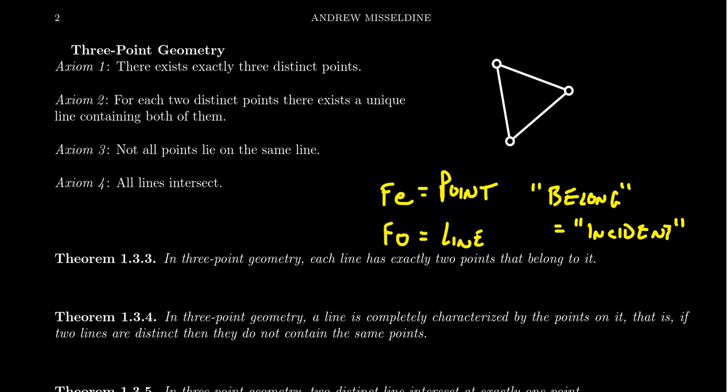And in fact, this is what we call three-point geometry. Where it gets its name is actually from the first axiom of Fee-Foe theory. If we rebrand it using lines, points, and incidence, the first axiom stated that there exists exactly three distinct Fee's in the system. We can rewrite that as: there exist exactly three distinct points. And that's actually where it gets its name — we're calling this three-point geometry because we have three points given by axiom one.